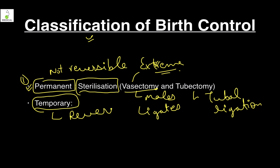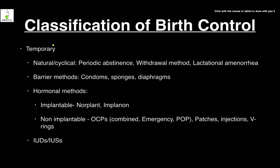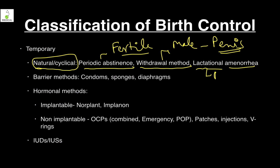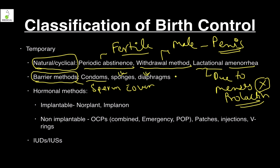The second type is temporary, which is reversible — it can be for minutes, days, or years, but whenever a person wants to reverse it, it can be reversed. Temporary methods include: natural or cyclical methods such as periodic abstinence, withdrawal method, and lactational amenorrhea; and barrier methods, which prevent the meeting of sperm with ovum using physical structures like condoms, sponges, and diaphragms.